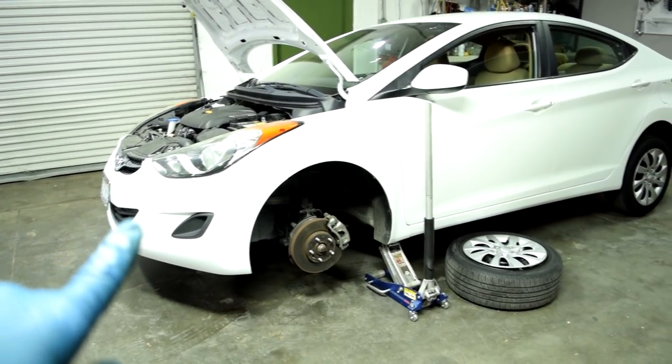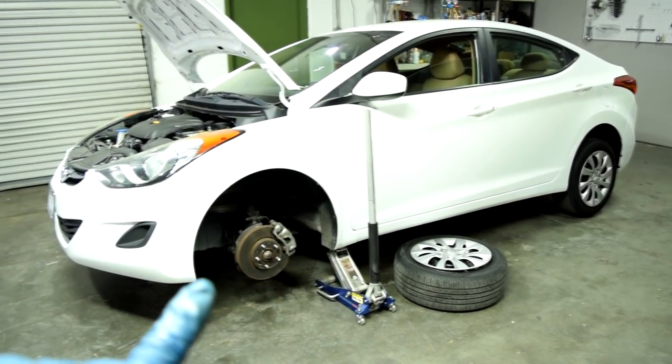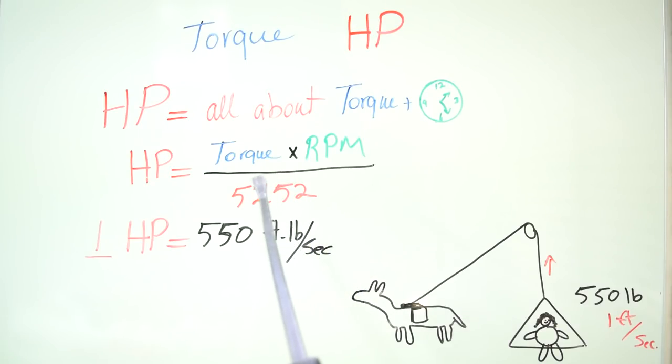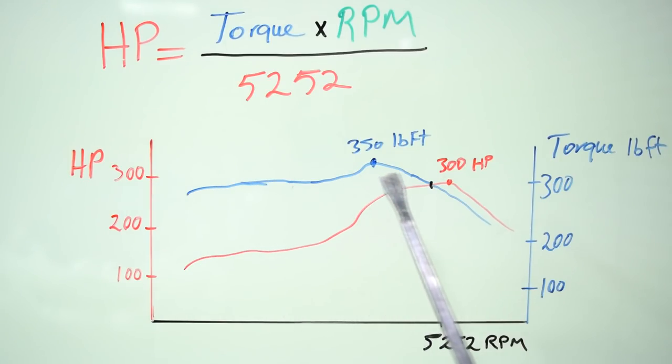Also you might find it interesting that when you take your car to get dynoed, what they do is actually measure the torque at your wheel. And once the computer has your torque and the RPM at which that torque was measured at, it plugs in into this equation right here and gives you your horsepower. And as I said before, the numbers you get for your horsepower and torque whenever you get your car dynoed are your peak numbers. Basically the maximum your car was able to put out.